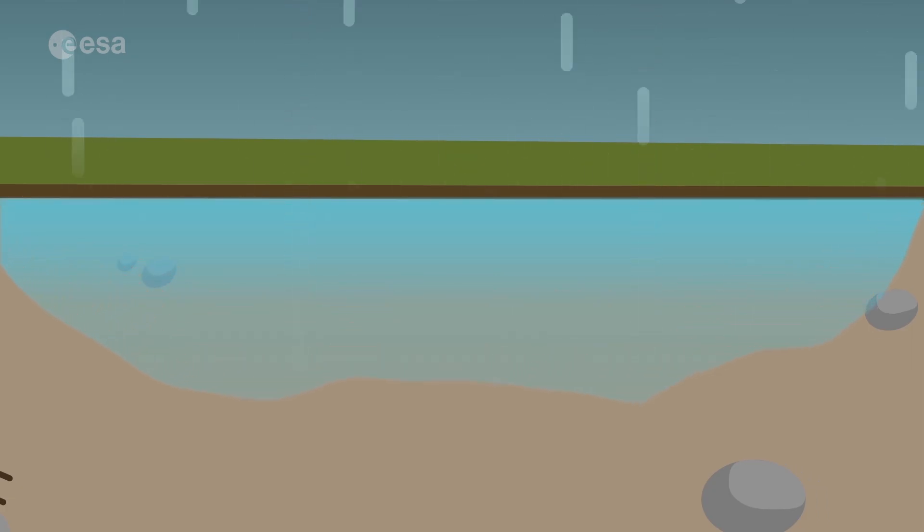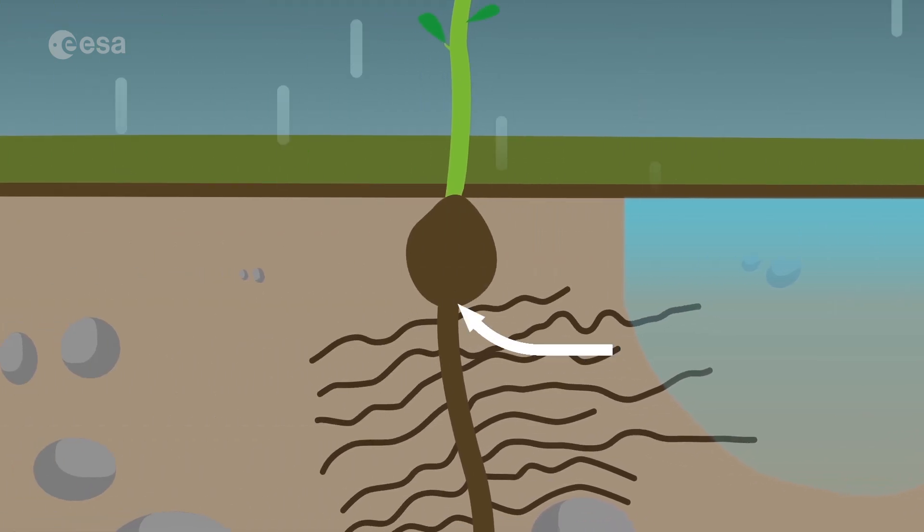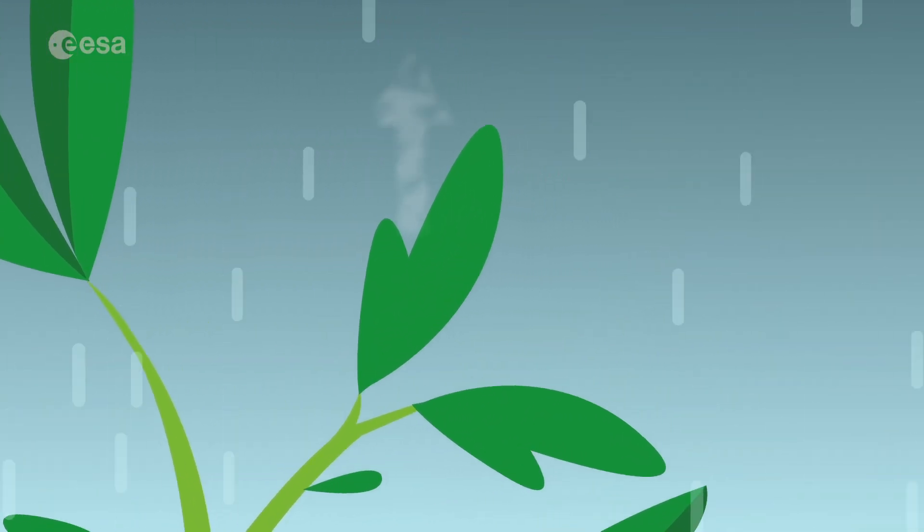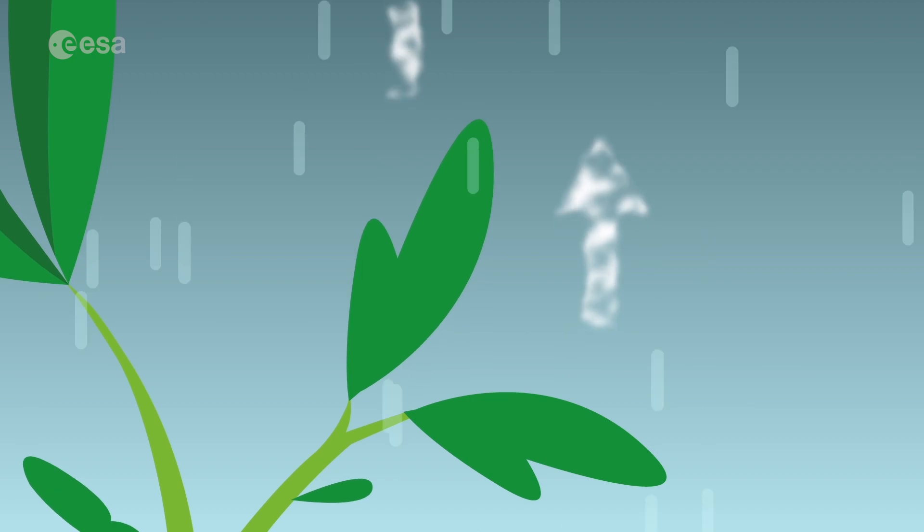Water that falls on land soaks it and becomes groundwater that plants, animals and humans use to drink. Water that falls on vegetation evaporates again through the leaves of the plants.